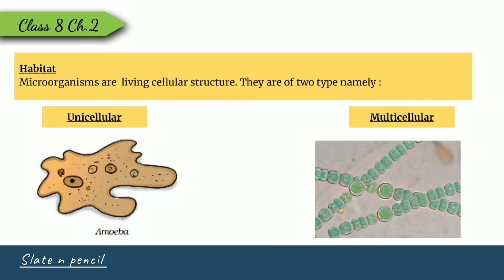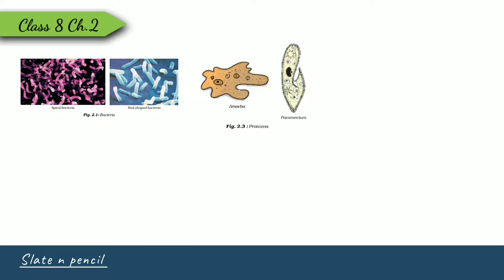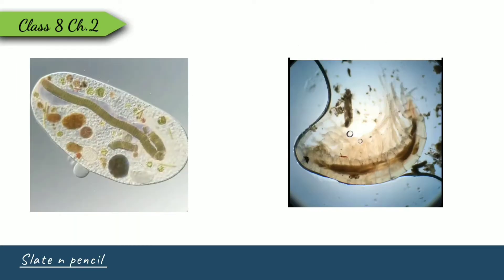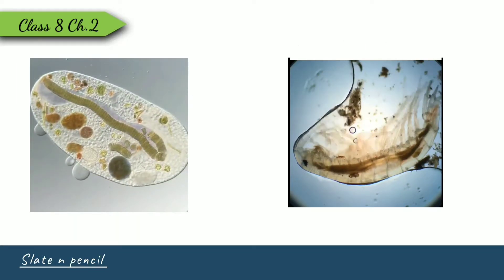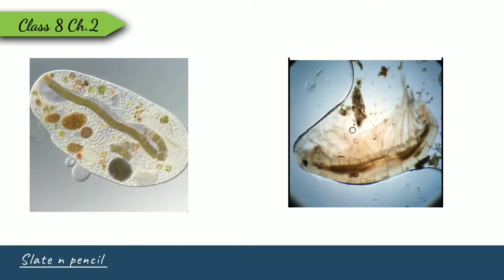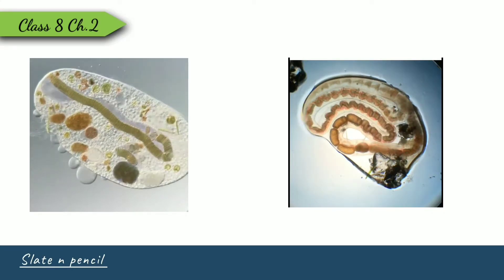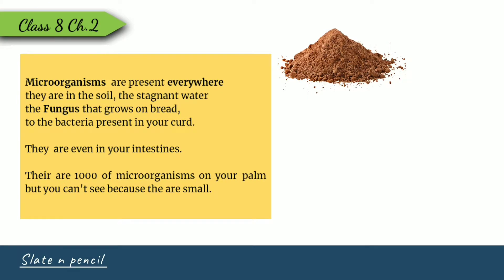Microorganisms can be of two types: single-celled or multicellular. Bacteria, protozoa, and some algae like Chlamydomonas are unicellular, while most fungi and algae are multicellular. Microorganisms can survive under all environmental conditions — from ice-cold climates to hot springs, deserts, and marshy lands. Microorganisms are present everywhere.